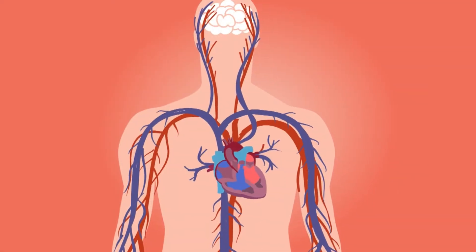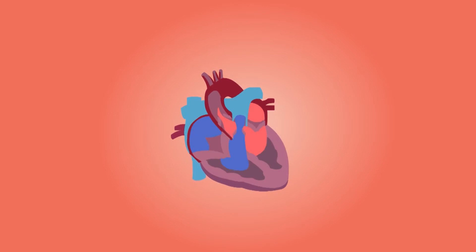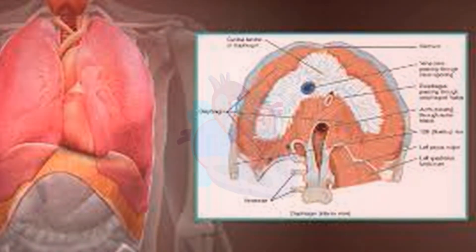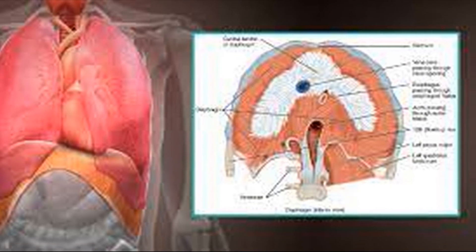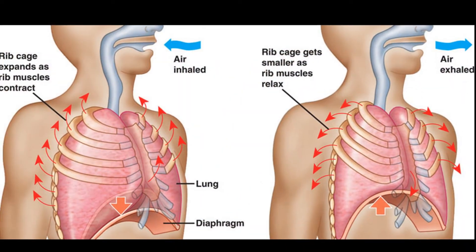The oxygenated blood is taken to the heart, from where it enters into the systemic circulation. The coordinated action of the diaphragm, ribs and chest muscles are responsible for drawing in fresh air (inspiration) as well as for expelling the waste gases (expiration).